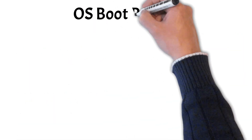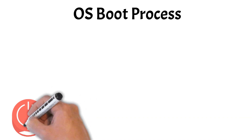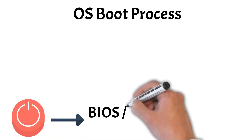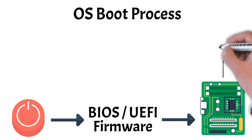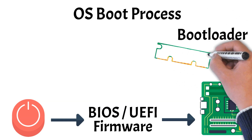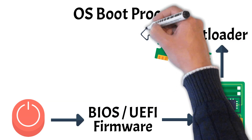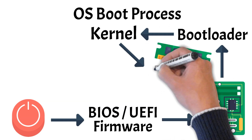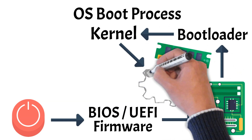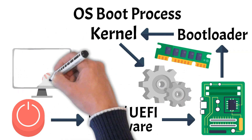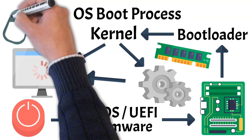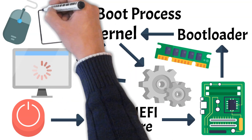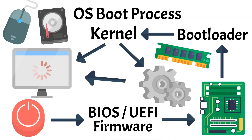Before we dive deeper, it's important to understand how the operating system actually starts, through what's called the boot process. When you power on a computer, a well-orchestrated sequence of events kicks off. It begins with the BIOS, or UEFI firmware, which performs basic hardware checks and locates the bootloader, a small program responsible for loading the operating system into memory. Once the bootloader runs, it loads the kernel — the core of the OS — which then takes control of the system and starts initializing essential services, drivers, and user interfaces. At this point, the operating system becomes fully active, ready to manage resources and enable user interaction. Understanding the boot process shows how the OS transitions from stored data into a working environment, laying the foundation for everything the user sees and does.